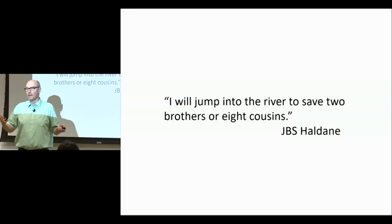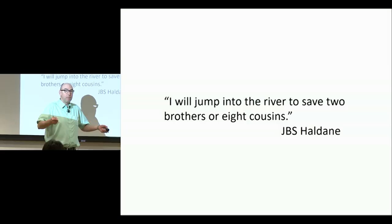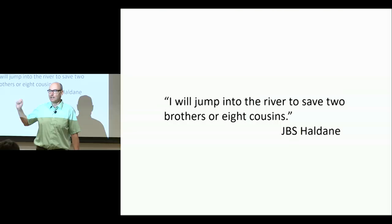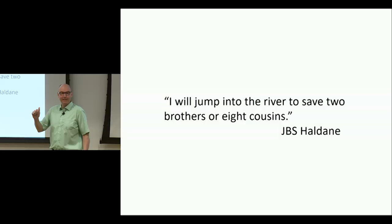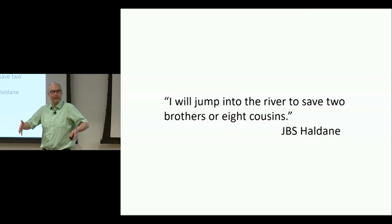What kind of traits are we talking about? A trait where I do something in order to help somebody else. There's a famous quote by J.B.S. Haldane, a founding father of population genetics. In a pub conversation, as Maynard Smith remembers, he was asked whether he would risk his life to save somebody. He made some calculations on a napkin and said: 'I will jump into the river to save two brothers or eight cousins.' His coefficient of relationship with his brother is one-half, so he'd better save two brothers. His coefficient with a cousin is one-eighth, so he'd better save eight cousins.